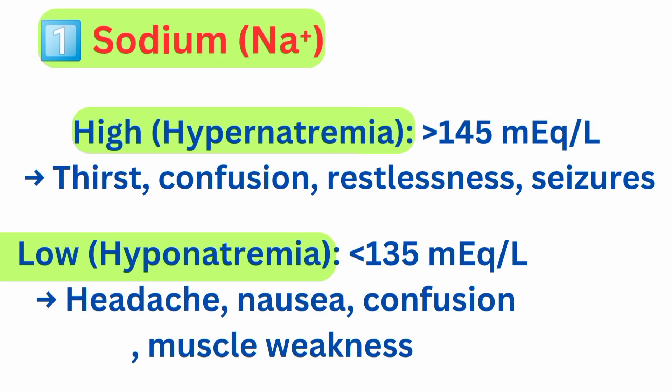Sodium (Na⁺): high level is hypernatremia (above 145 mEq/L), symptoms include thirst, confusion, restlessness, and seizures. Low level is hyponatremia (below 135 mEq/L), symptoms include headache, nausea, confusion, and muscle weakness.